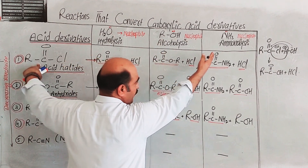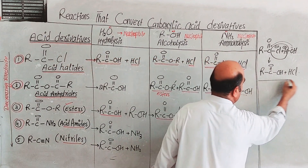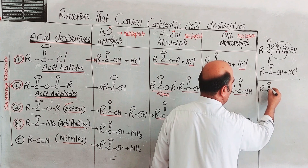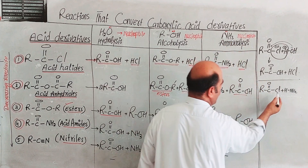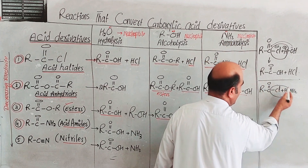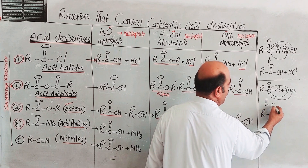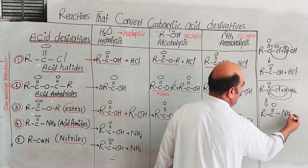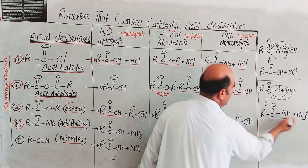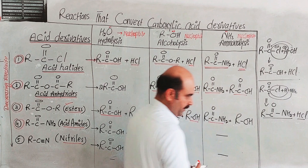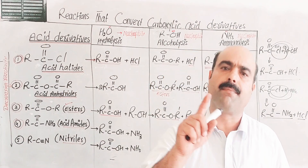When we use ammonia, the reaction is ammonolysis. For acid halides, ammonia reacts to give the product R-CO-NH2 (acid amide) plus HCl. The product is an acid amide. These reactions have already been discussed one by one in detail in previous videos.